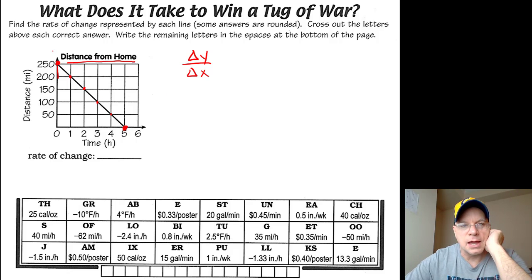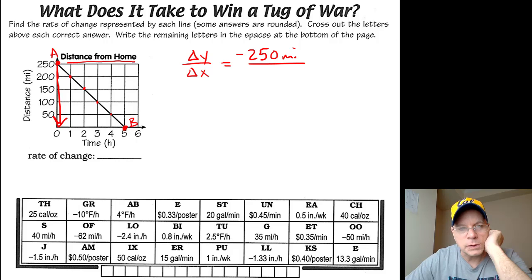If I'm calling this a and this b, if I'm moving from a to b, my change in y is down. I'm going from 250 to zero, so I've decreased by 250 miles. I'm going to the right five, so that's positive five hours.